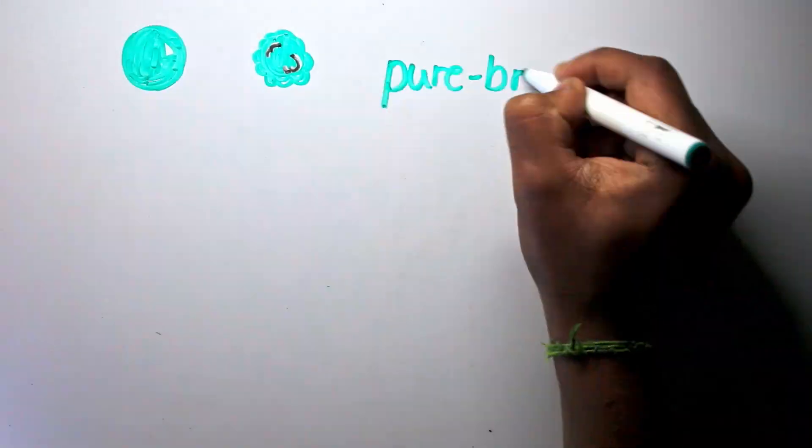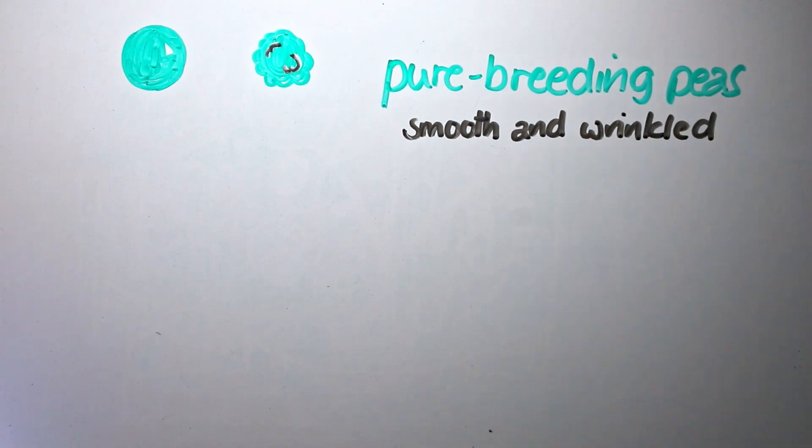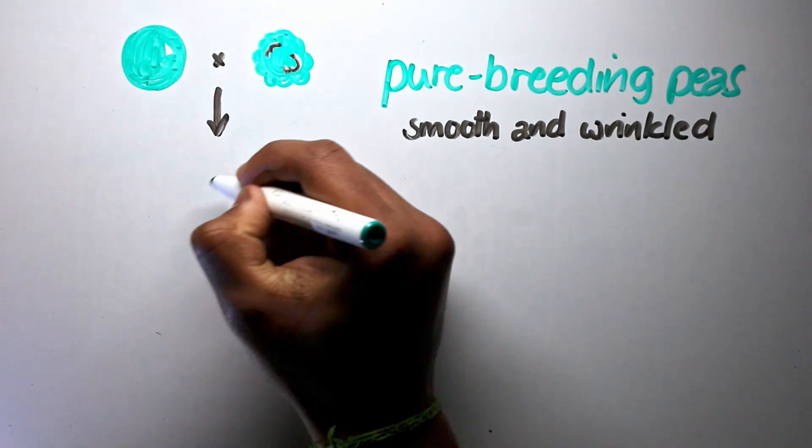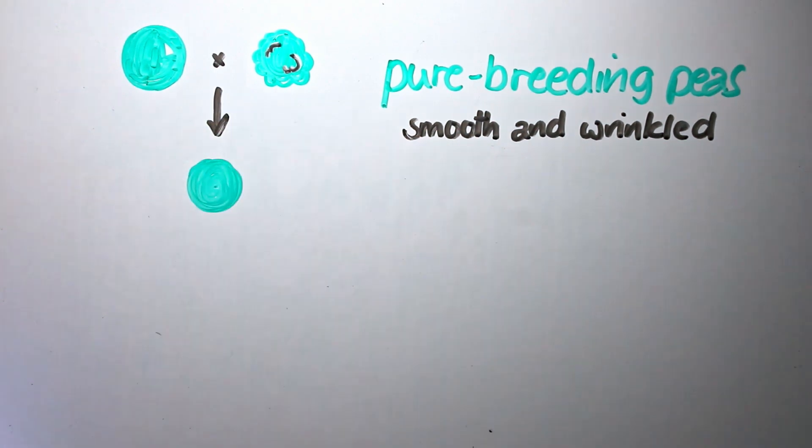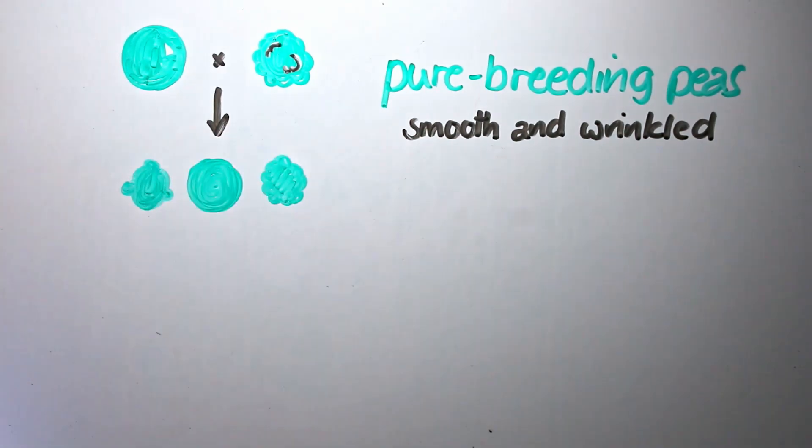Finally, for the actual experiment, he took two pure-breeding pea plants, one producing smooth peas, and the other producing wrinkled ones. He first bred these two plants together, and found that the offspring always produced smooth peas. This was already interesting, since he would expect the offspring to have some smooth peas and some wrinkled ones, or at least slightly wrinkled, slightly smooth ones, but neither of these were seen.